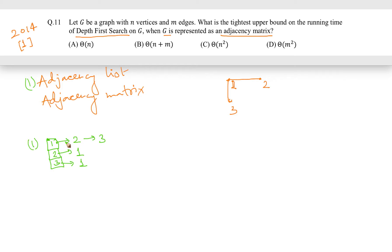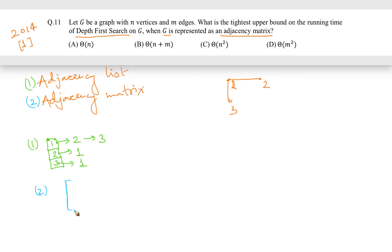In adjacency matrix representation, the graph takes somewhat more space and is stored in the form of a matrix. The matrix size will be n by n, where n is the number of vertices. Here, with three vertices, the matrix size is going to be three cross three.